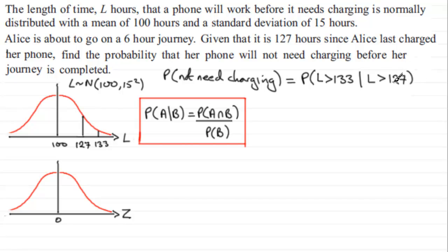And if you compare this with this result here, you'll see that we need both events to occur. And for both of these two events to be satisfied, L must be more than 133. Because if it's more than 133, it will be more than 127. So we've got probability L is greater than 133 hours, and we divide it with the probability that L is greater than 127.